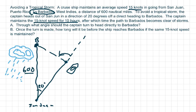So basically, what I want to do first on this problem is find out what this distance is. What is the distance from here to here? And the first thing I need to know is that if the captain maintains a 15 knot speed for 10 hours, then he traveled 15 times 10, which is 150 nautical miles. So this would be 150 nautical miles.